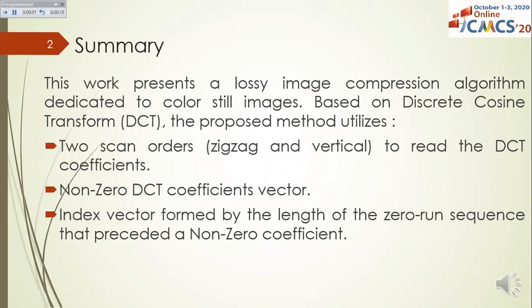This work presents a lossy image compression algorithm dedicated to color still images based on discrete cosine transform (DCT). The proposed method utilizes two scan orders — zigzag and vertical — to read the DCT coefficients, forming a non-zero DCT coefficient vector and an index vector formed by the length of the zero-run sequence that precedes each non-zero coefficient.